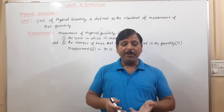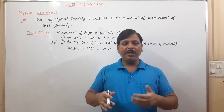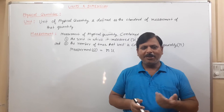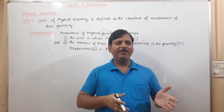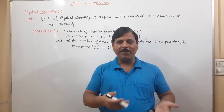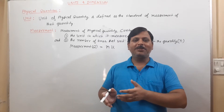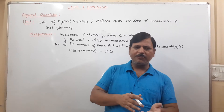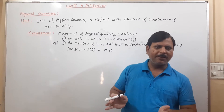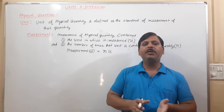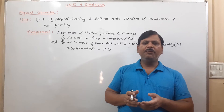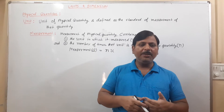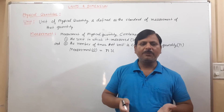Emotions like happiness or anger are not physical quantities — you cannot measure how much anger or humanity someone has. Physical quantities are those quantities which can be measured and in terms of which we can explain the laws of physics.